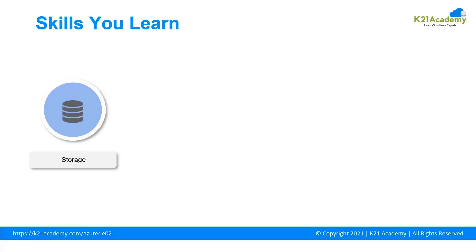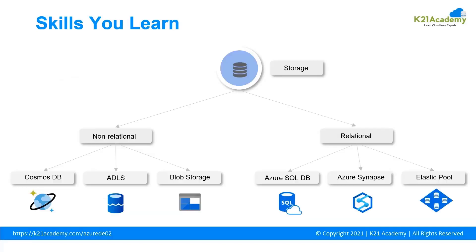Let's talk about storage. Microsoft provides different types of storage in Azure — non-relational storage and relational storage. Data can be structured, semi-structured, or unstructured. For non-relational storage, Microsoft provides Azure Cosmos DB, which is a NoSQL data store; Azure Data Lake Store, which is a hyperscale repository for big data analytics workloads and a Hadoop distributed file system for the cloud; and Blob storage, which can store and access unstructured data for demanding workloads. Blob storage is very cheap to maintain.